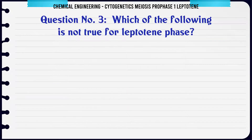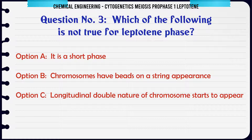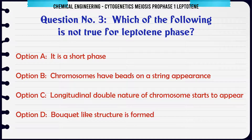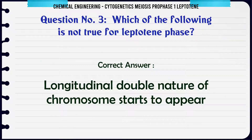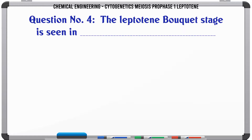Which of the following is not true for the leptotene phase? A. It is a short phase. B. Chromosomes have beads-on-a-string appearance. C. Longitudinal double nature of chromosome starts to appear. D. Bouquet-like structure is formed. The correct answer is A: Longitudinal double nature of chromosome starts to appear.